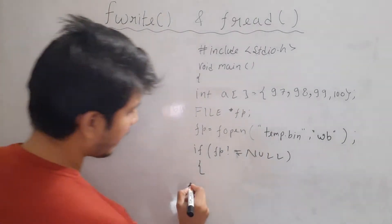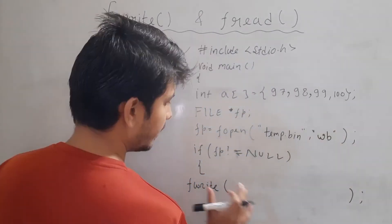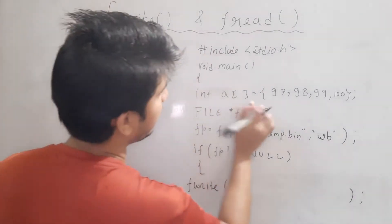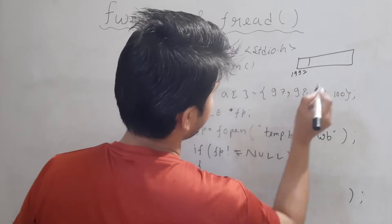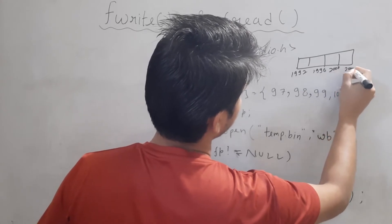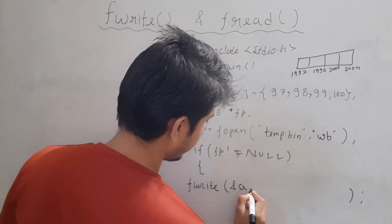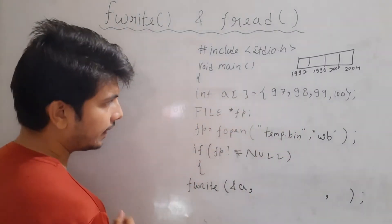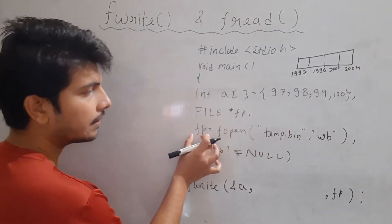Now we will use the fwrite function. I will write fwrite, and I have to pass four arguments. In the first argument, I will send the address from where the data needs to be sent. For example, in an array the base address is 1992 and considering integer of 4 bytes, the next will be 1996, then 2000, and then 2004. So I will send the address as end of a. At the end, we specify in which file you want to write the data, so I will write fp here.